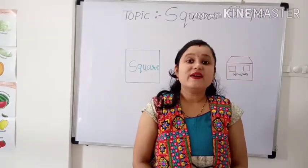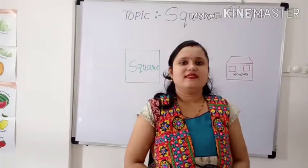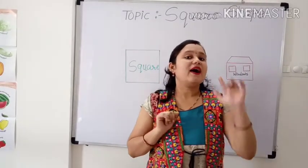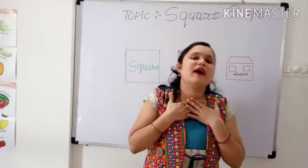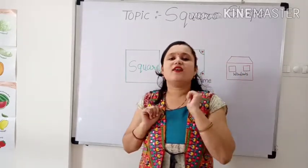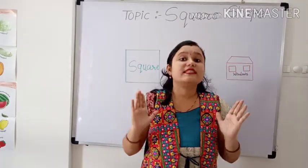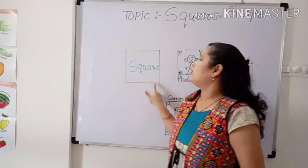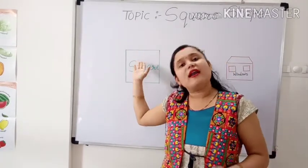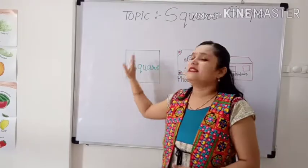Now, let's sing a song about square. Hello, hello, square is my name. Hello, hello, square is my name. I have four sides, and I have four sides, and they all are the same. They all are the same.